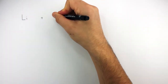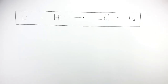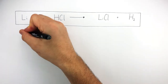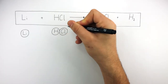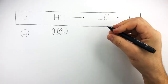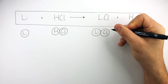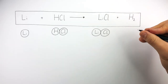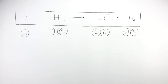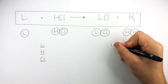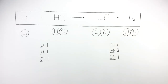Li plus HCl reacts to form LiCl plus H₂ is the final equation we're going to balance. The equation tells us there is one lithium atom on the left, one hydrogen chloride molecule on the left consisting of one hydrogen atom and one chlorine atom. On the right there is one lithium chloride compound consisting of one lithium atom and one chlorine atom, and one hydrogen molecule consisting of two hydrogen atoms. Underneath we write out all the elements and count up the number of atoms of each element on both sides.